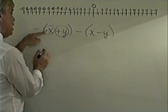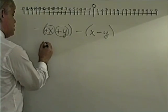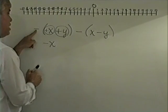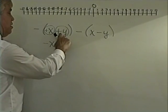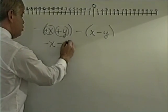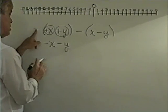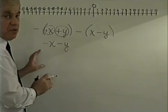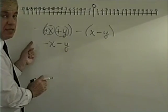This negative changes that positive to its opposite, which is a negative x. This operator, the negative, changes that sign to its opposite, which is a negative, and bring down the y. Now, this has done its work. The parentheses are gone. I don't show that anymore, and don't show this negative sign anymore.